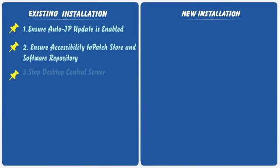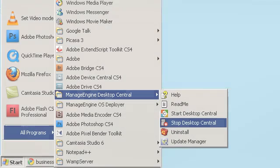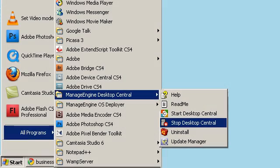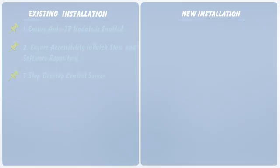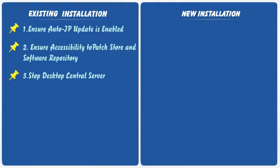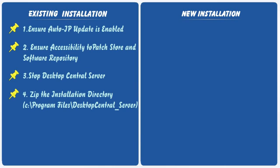Now, stop the Desktop Central server from the existing installation. You can select the Stop Desktop Central Server option from the Start menu.